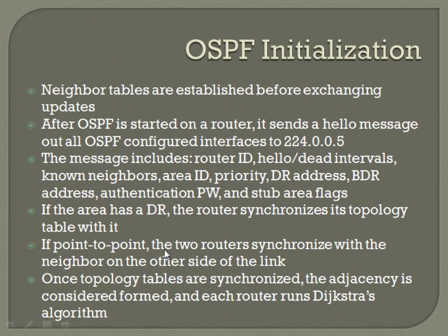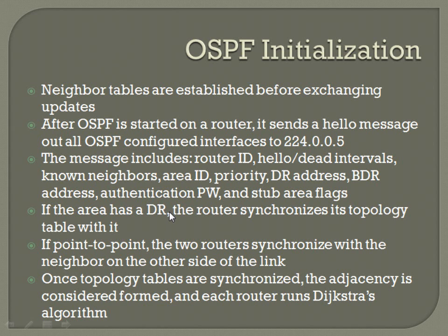Since there's only two routers on a point-to-point link, you don't have to worry about a DR and BDR — you just synchronize your table with the router on the other side. Once topology tables are synchronized, the adjacency is considered formed and each router runs Dijkstra's algorithm. Basically, you form all your neighborships, send out initial hello information, get your neighbor table together, synchronize your topology table with the DR if one's in effect, and then run the SPF algorithm to determine your best route to each individual subnet.